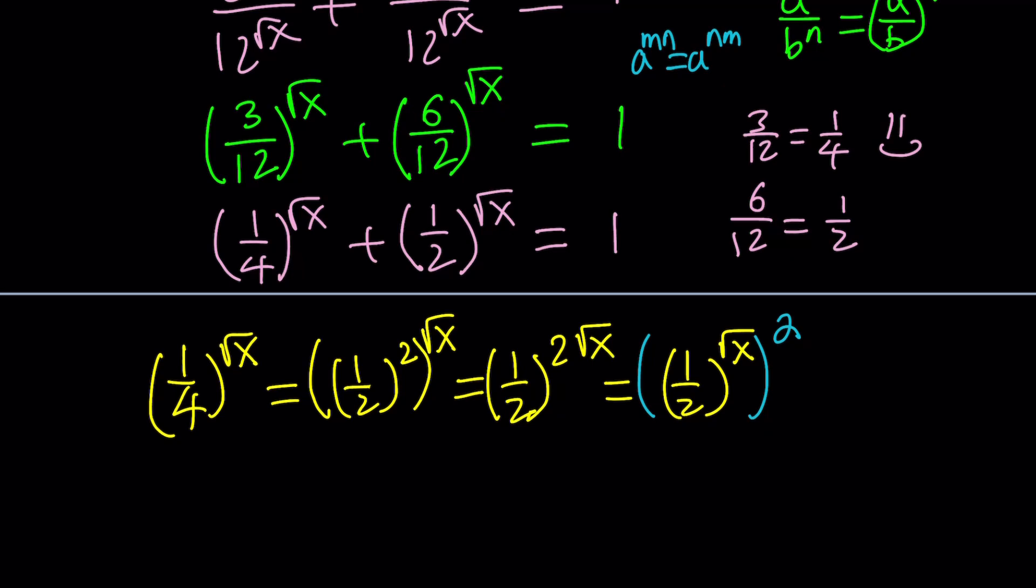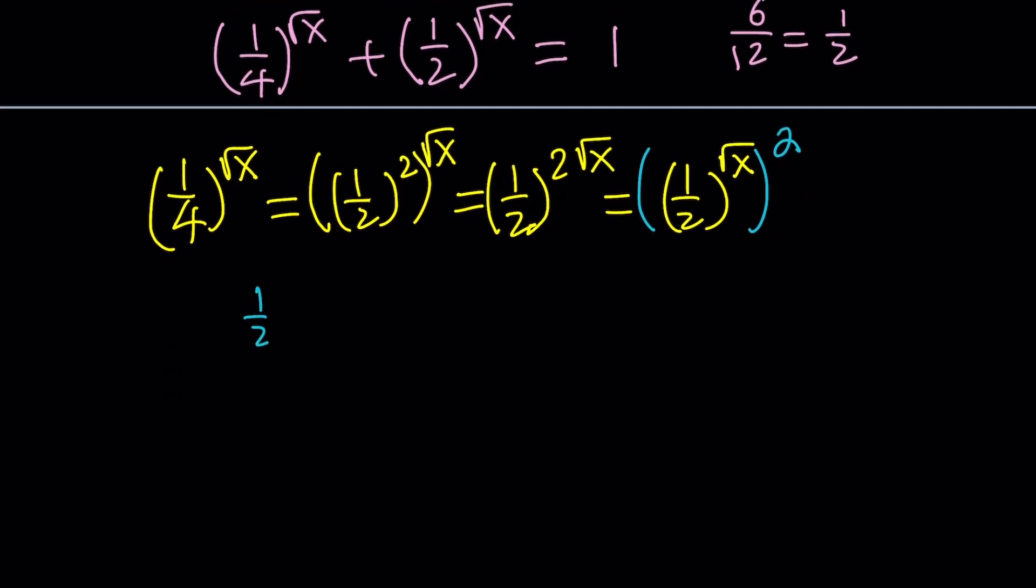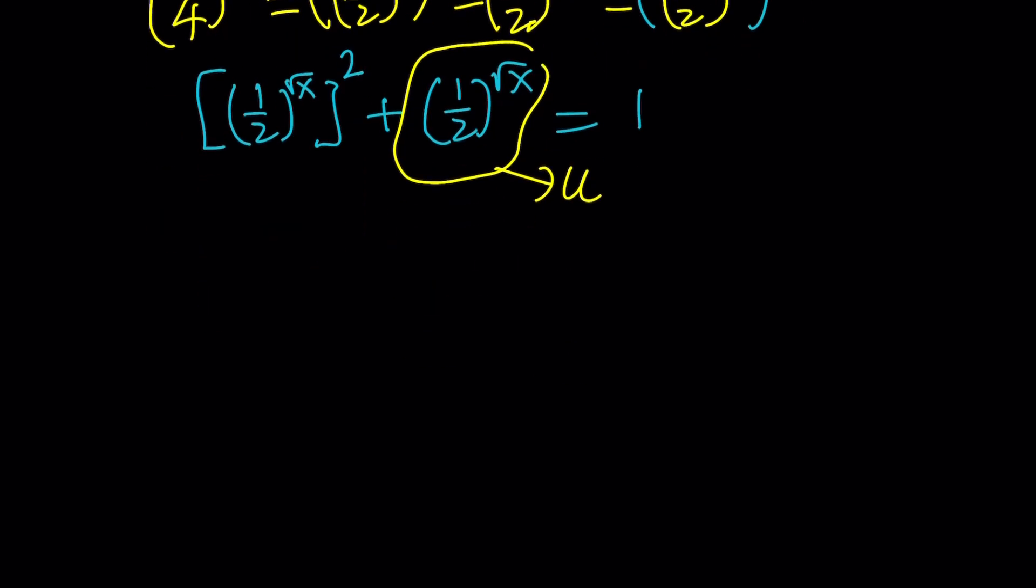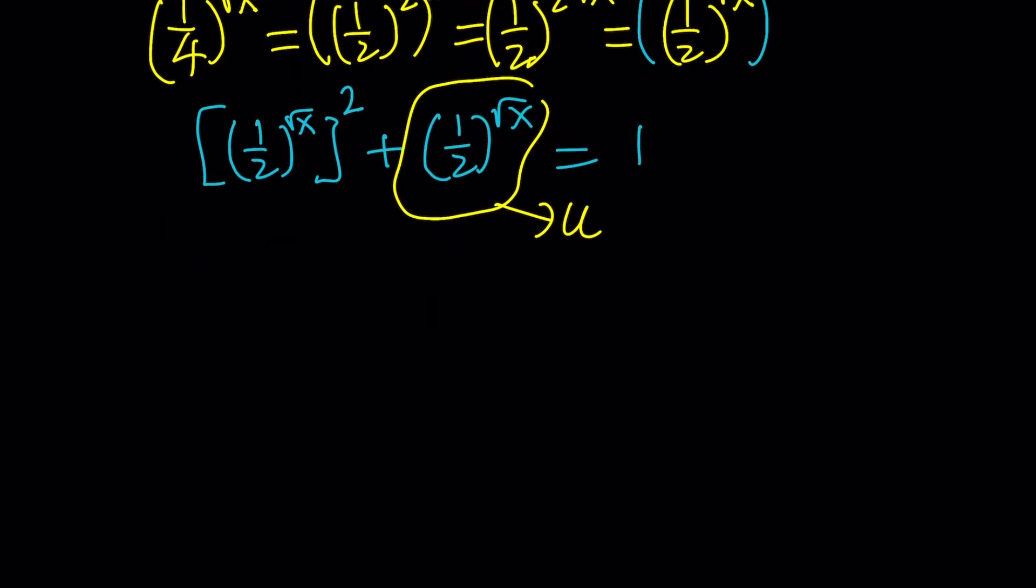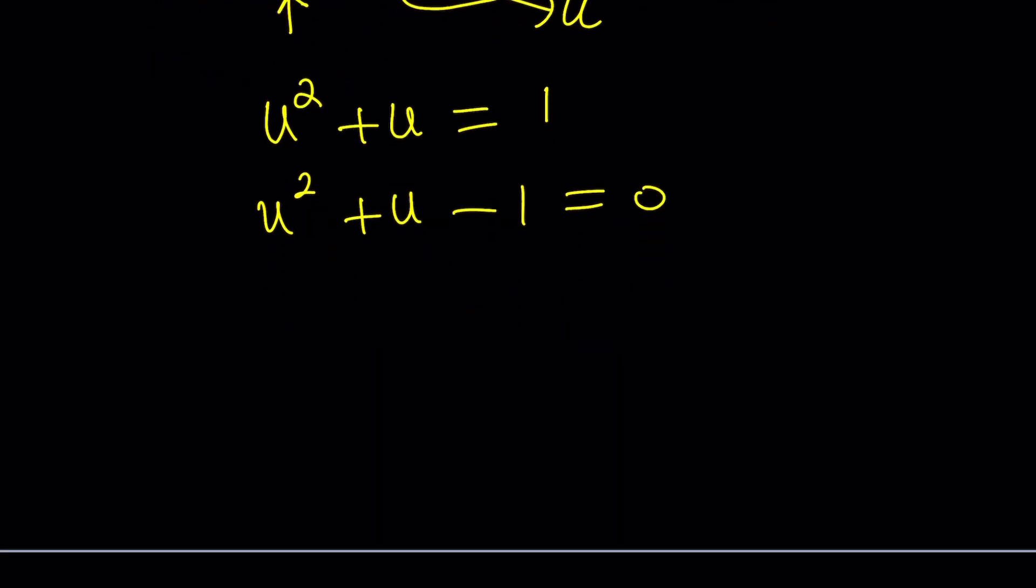Now we can replace 1 fourth to the power square root of x with 1 half to the power square root of x squared, plus 1 half to the square root of x equals 1. What does this tell you? It should tell you to substitute. Let's go ahead and call this u. If you call that u, then this will be u squared. So we get u squared plus u equals 1. And then we can solve this because this is quadratic. Let's subtract 1 and then use the quadratic formula.